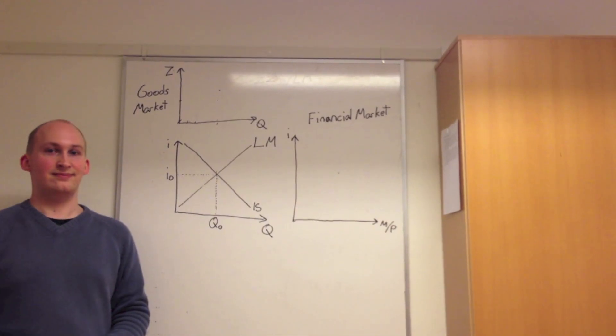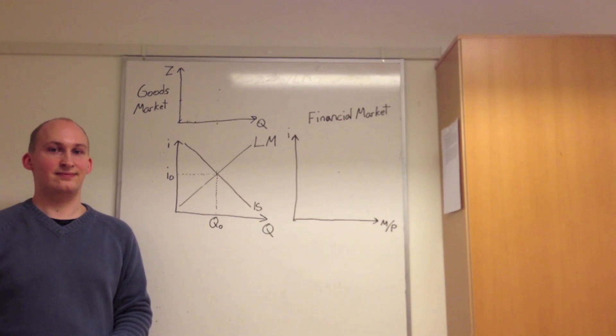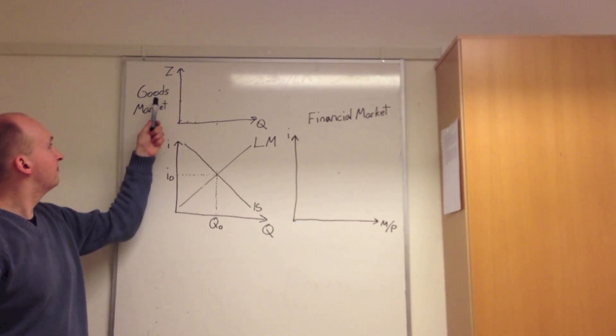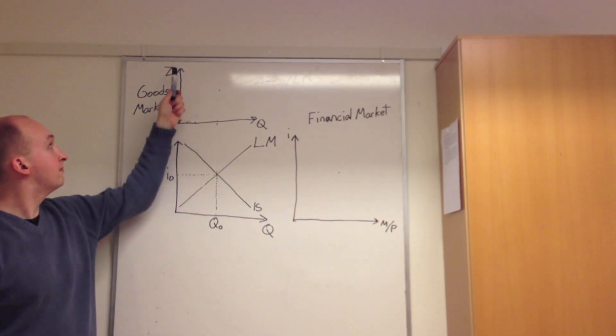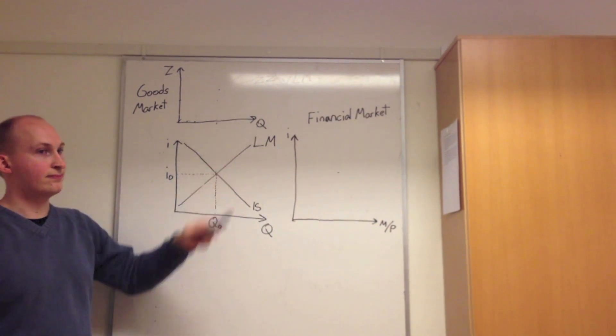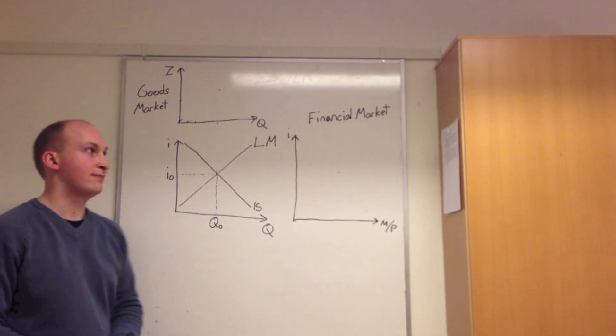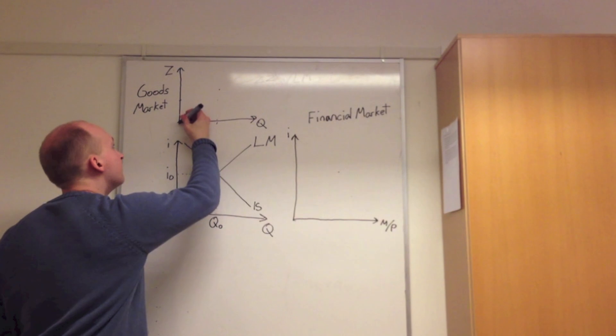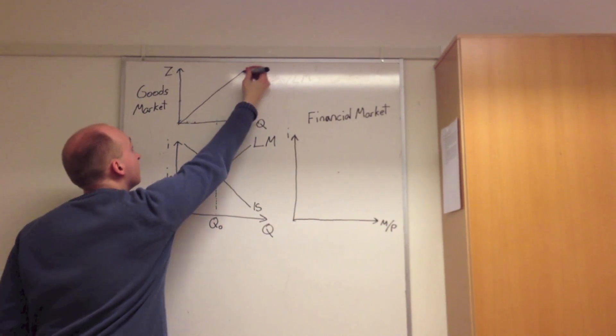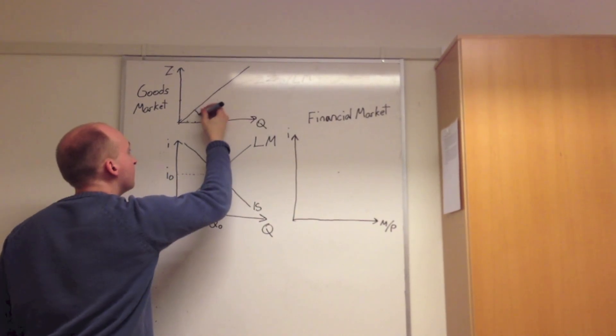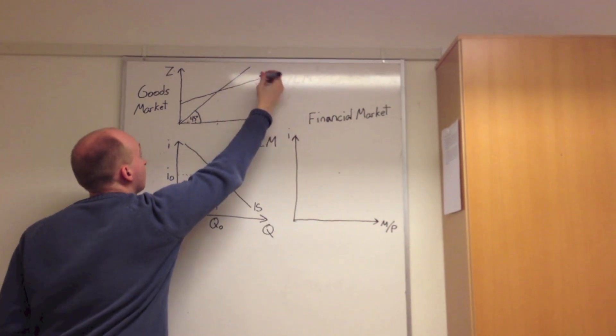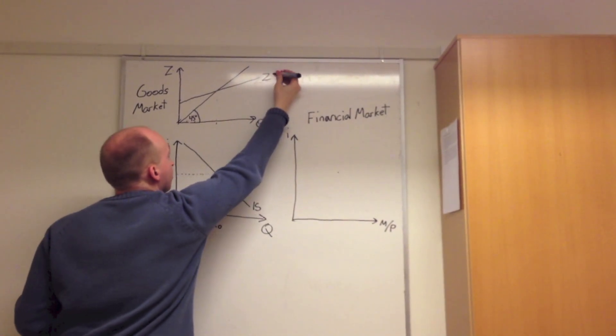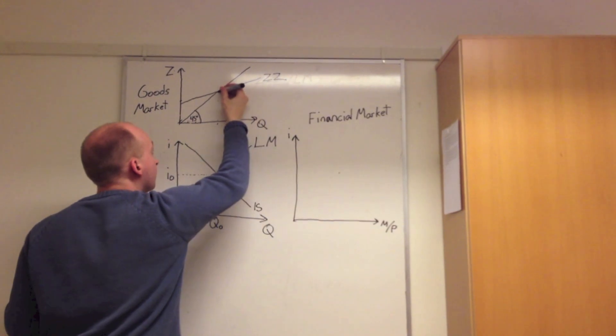But how do we derive the IS curve? First, we draw the diagram for the goods market above the diagram for the IS and LM curves, where Z equals the total aggregate demand, Q being the total quantity demanded. So first, we draw a 45 degree line representing a one-to-one relationship between Z and Q. The next step is to draw the total demand curve being flatter than the actual 45 degree line given by ZZ.